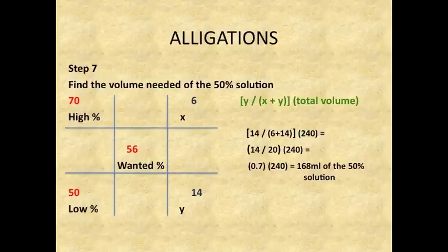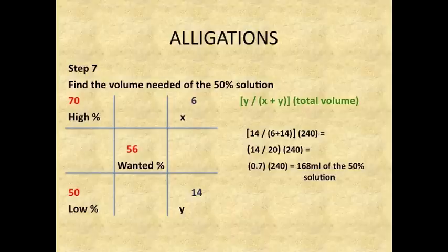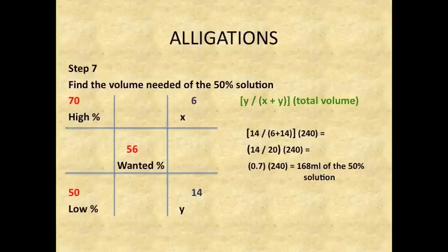Step 7: Find the volume needed of the 50 percent solution. Use the formula Y divided by X plus Y, times the total volume. Replacing the values of X and Y: 14 divided by (6 plus 14) times 240 equals 14 divided by 20 times 240, which equals 0.7 times 240, which equals 168 ml of the 50 percent solution.